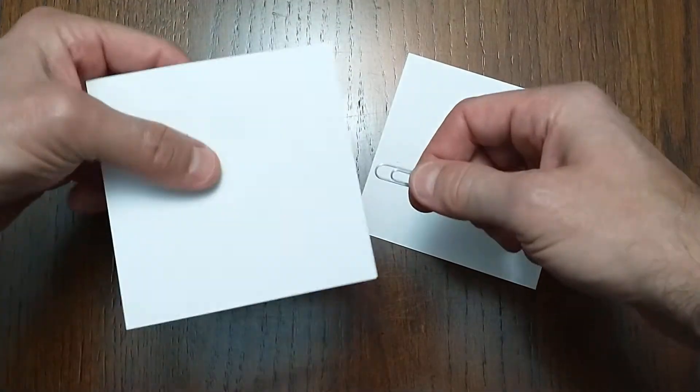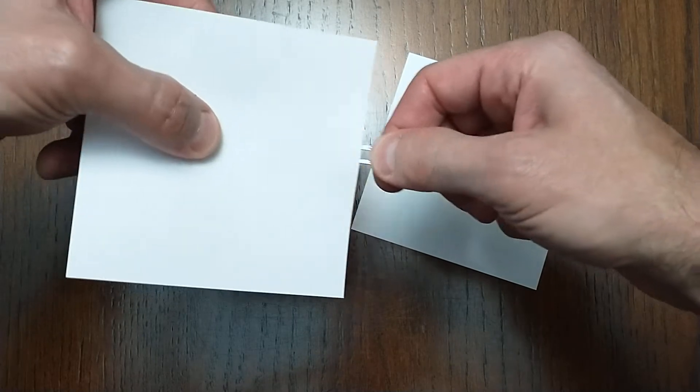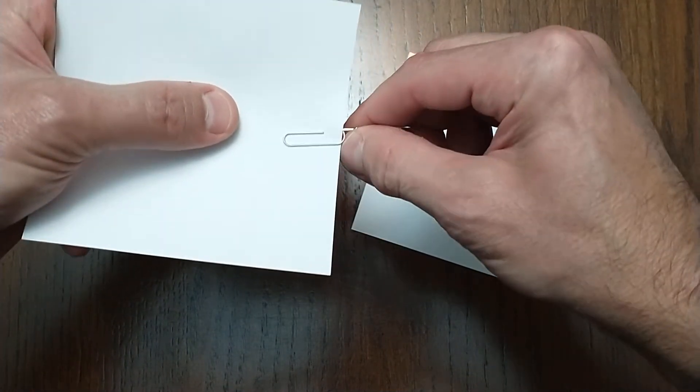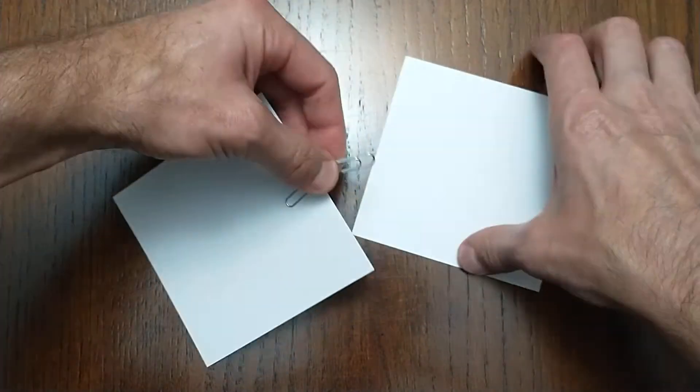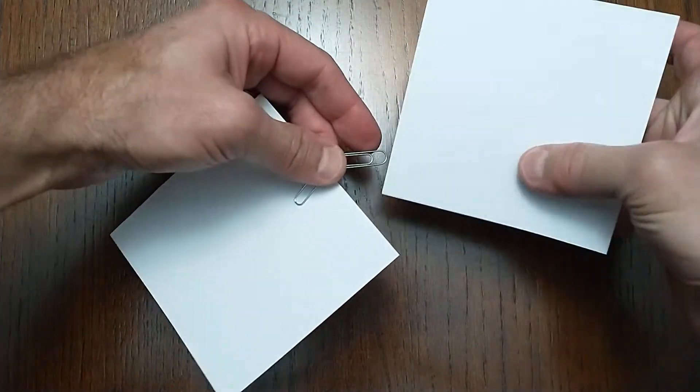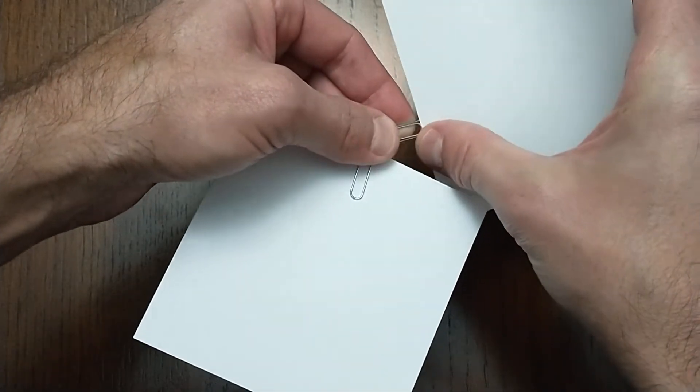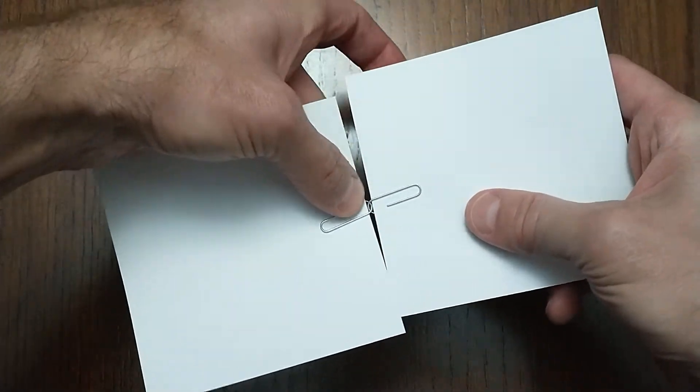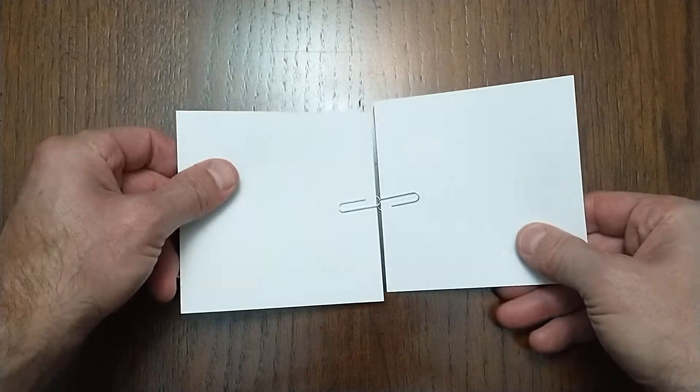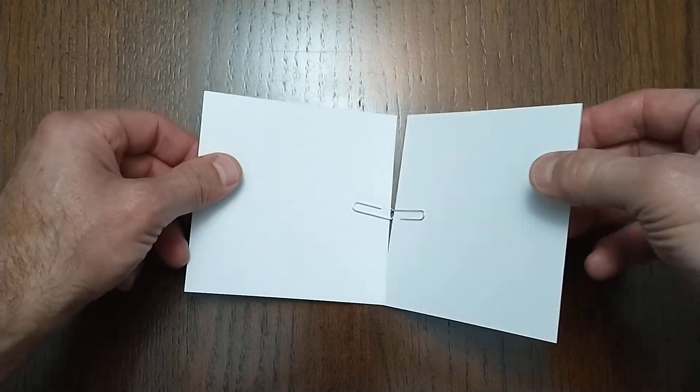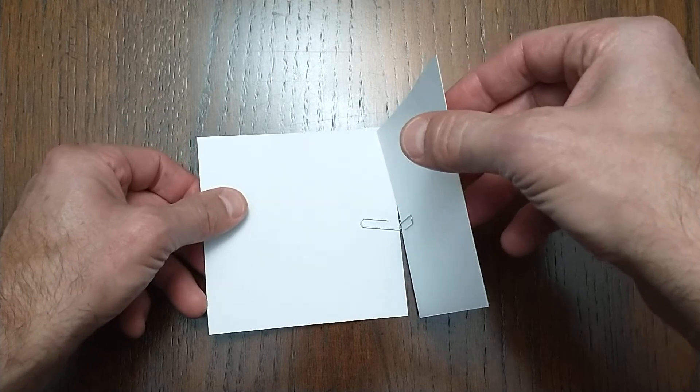So the idea being that you would clip this on the midpoint of one edge of a square, and then clip this on the midpoint of another edge. So now what you have is you have those two squares sort of attached with a hinge. So you can sort of fold that up like that.